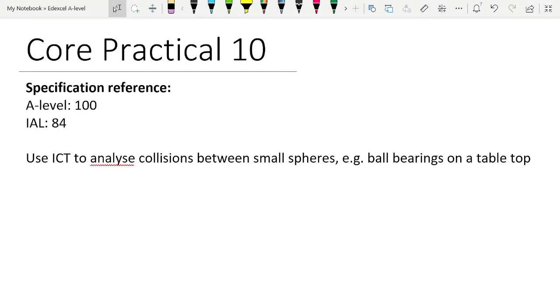Today's lesson is on Core Practical 10, the final Core Practical for further mechanics. It's a bit of a strange one, and I'll explain why later. The specification reference for home A-level is 100, and for international A-level it's 84.